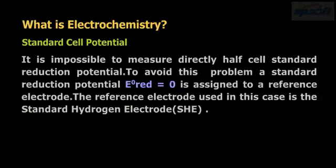It is impossible to measure directly half-cell standard reduction potential. To avoid this problem, a standard reduction potential of 0 is assigned to a reference electrode. The reference electrode used in this case is the standard hydrogen electrode, SHE.